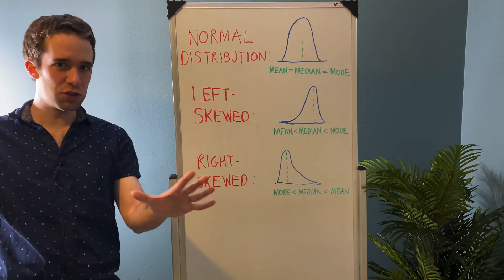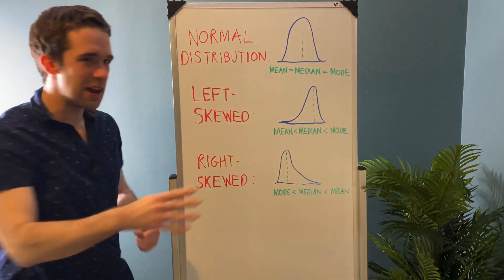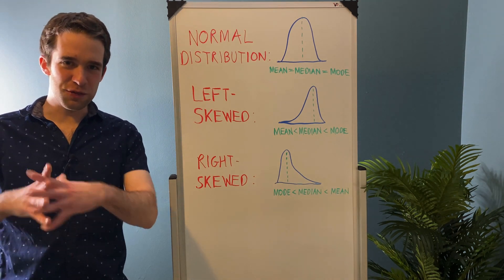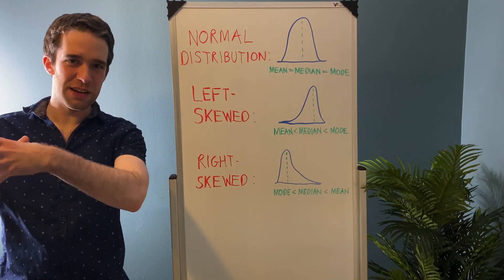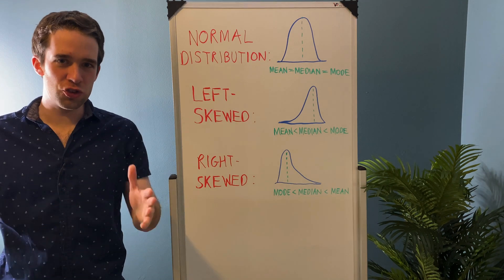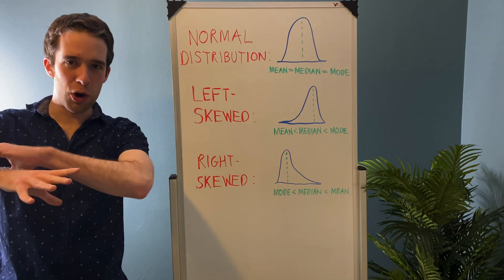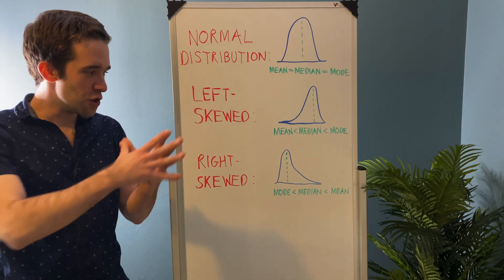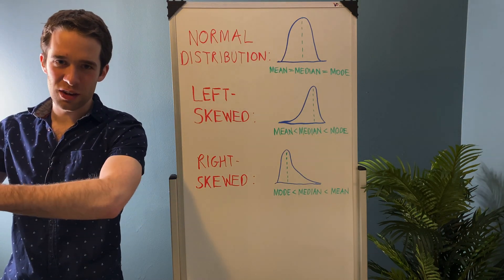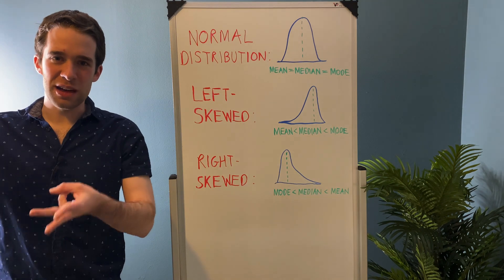In left-skewed distributions, the outliers on the left side pull the mean in that direction. The mode is where most data points show up, and the median is somewhere in the middle — so the mean is less than the median, which is less than the mode. Right-skewed data is similar but probably significantly more common. Distributions like the exponential and gamma distributions generally take on a right-skewed form, where most data is on the left but outliers on the right pull the distribution in that direction. In this instance, the mode is on the left where most data is, the median is slightly greater, and the mean is pulled further right by the outliers — giving you mode less than median less than mean.